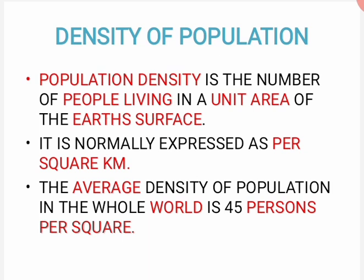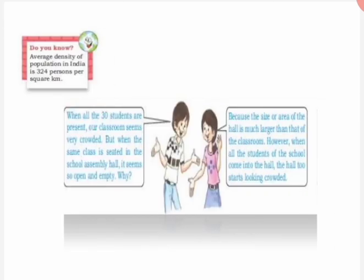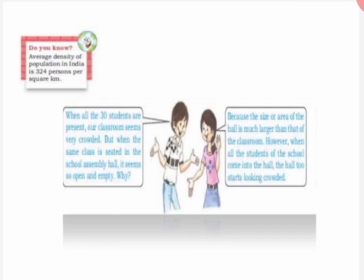Hum agar poori world ki density ko dekhein, toh per square kilometer mein 45 ke near about log rehte hain. Har jagah par alag-alag hai is ka maapne ka tareeqa, toh density bhi alag-alag hai alag-alag areas mein.